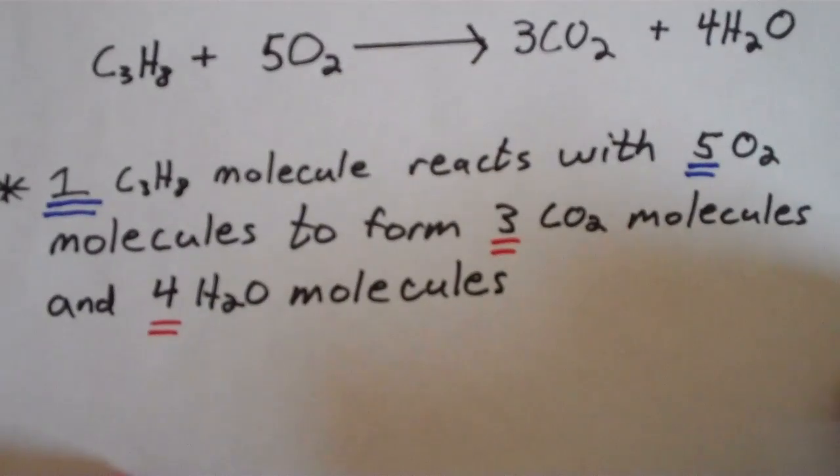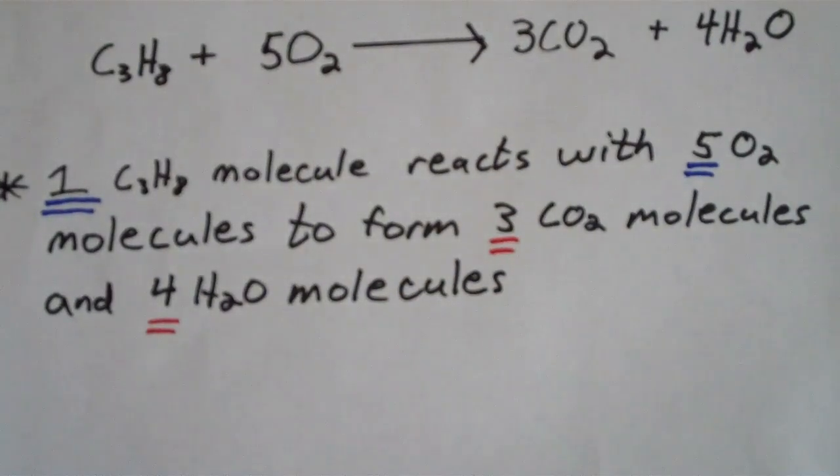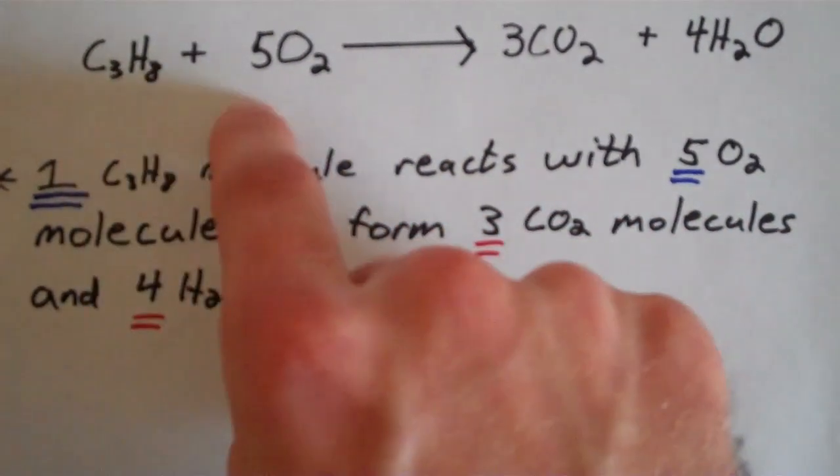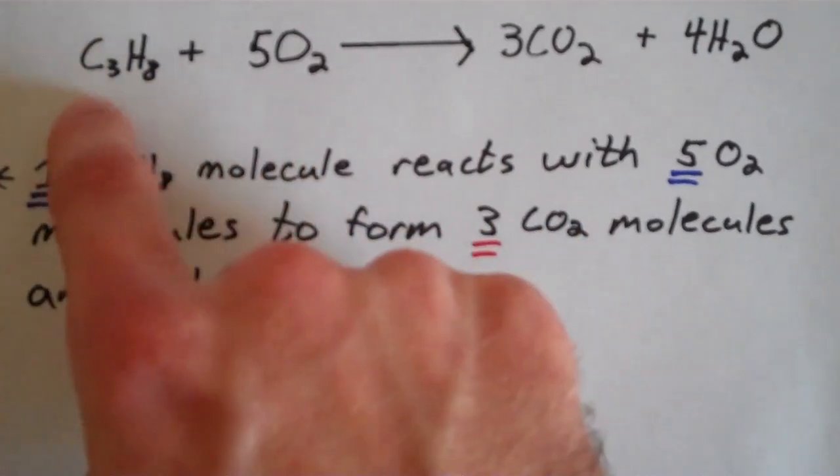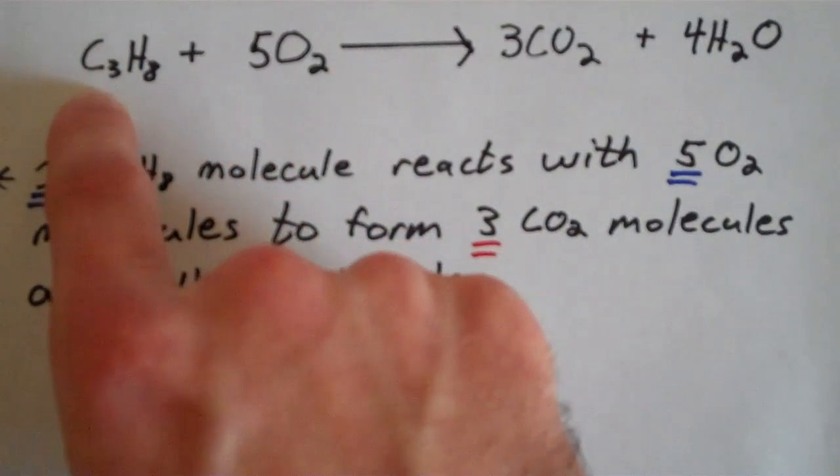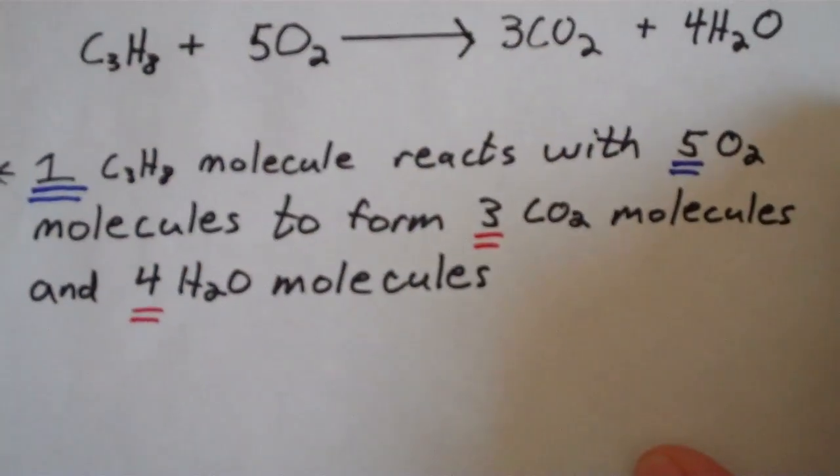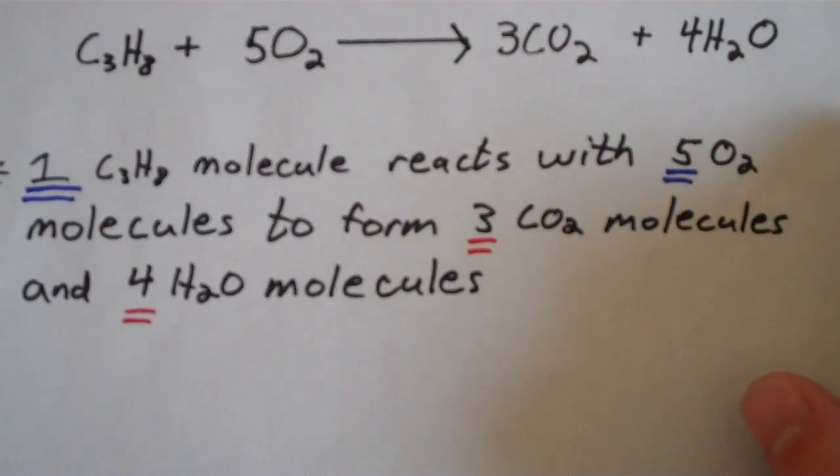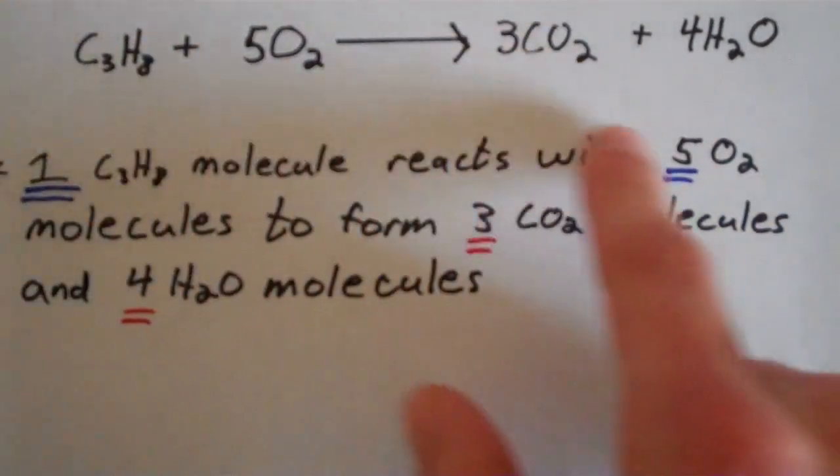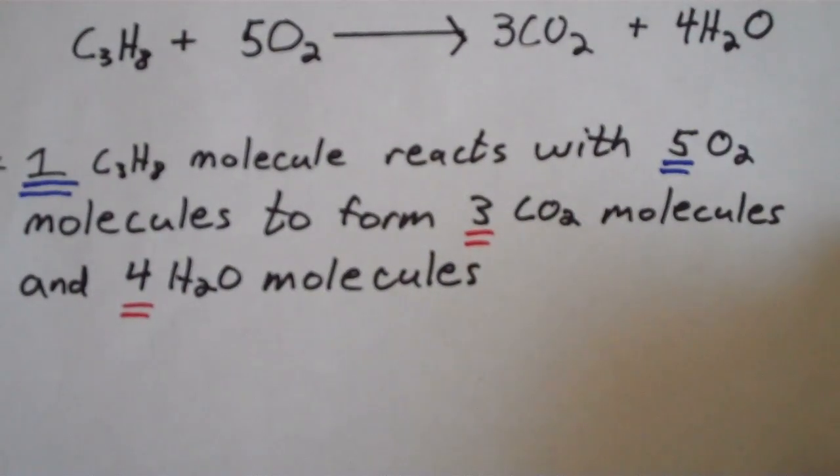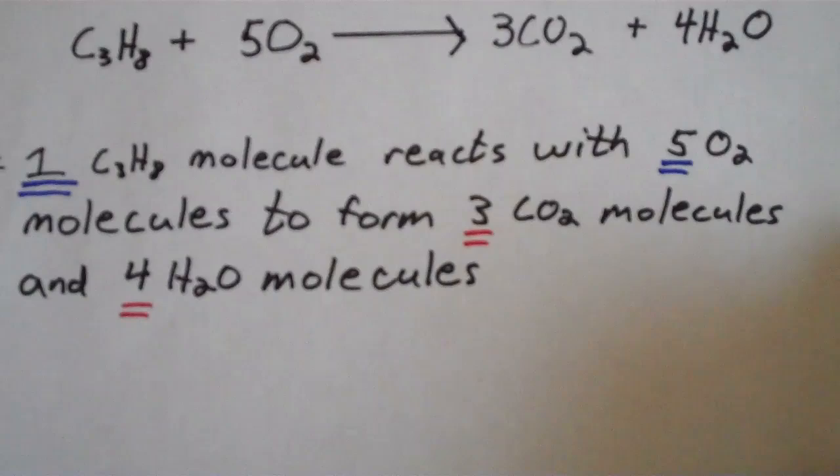And the common mistake that people make here is that moles is different from mass. This equation does not say that one gram of propane reacts with 5 grams of oxygen. No. It says that one mole of propane reacts with 5 moles of oxygen. So if you are given mass, as you probably commonly will be, you must convert that mass to moles in order to use this balanced chemical equation to get what you want. And the way that you do that is by using molar mass, which is given on the periodic table.